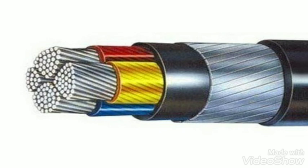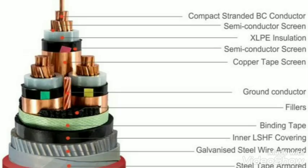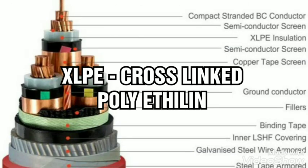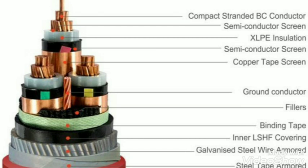The PVC material name — its full chemical name — is polyvinyl chloride. This picture shows the different layers of a PVC insulated cable. Next one is XLPE. XLPE is called cross-linked polyethylene, where the X represents cross-linked.